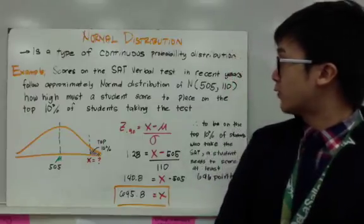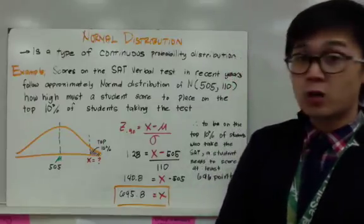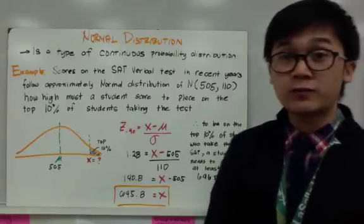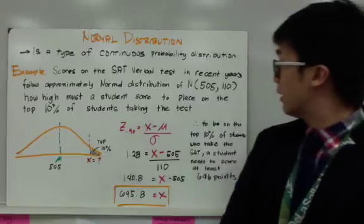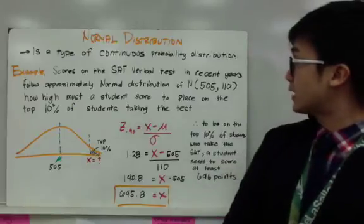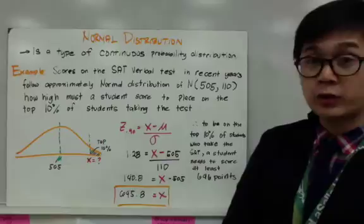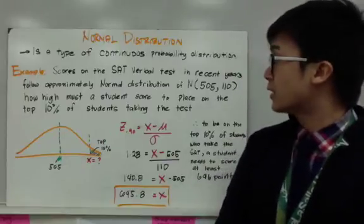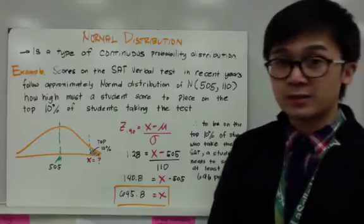scores on the SAT verbal test in recent years follow an approximately normal distribution of N(505, 110), wherein 505 will be the mean score for this SAT verbal test, and 110 will be your standard deviation. Now, the question is, how high must a student score to place on the top 10% of students taking the test?